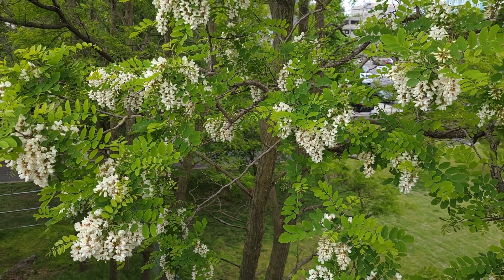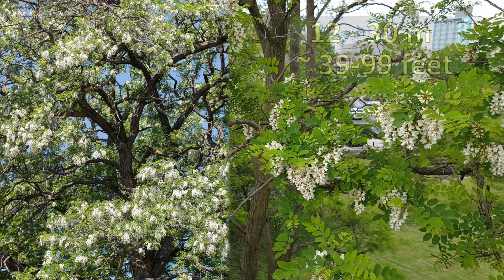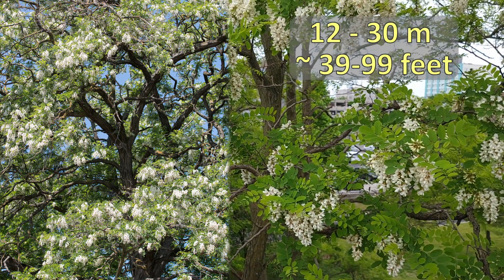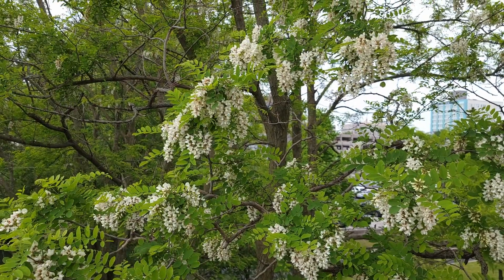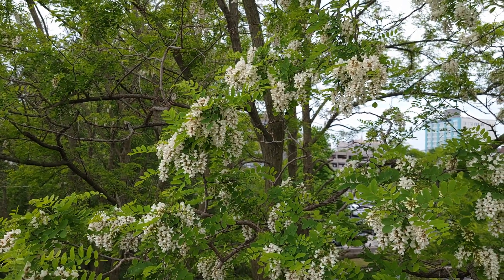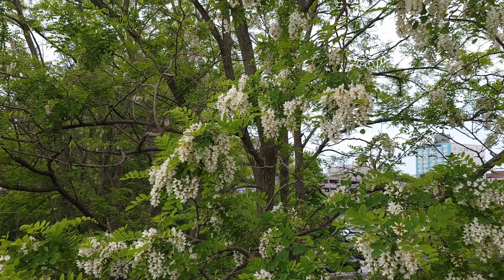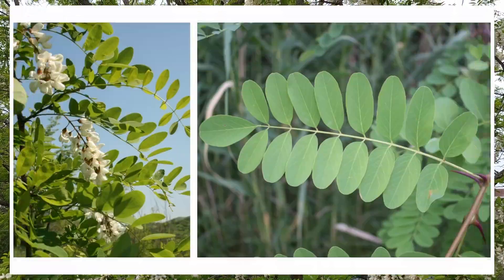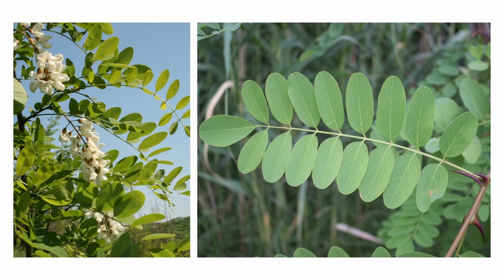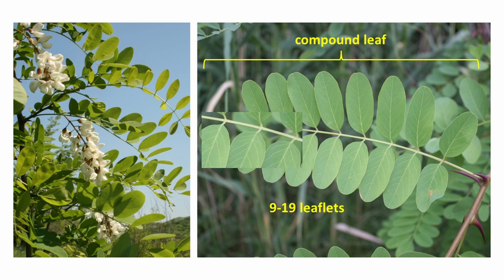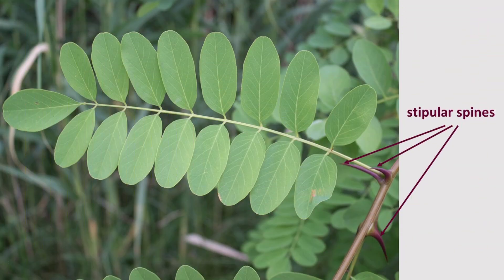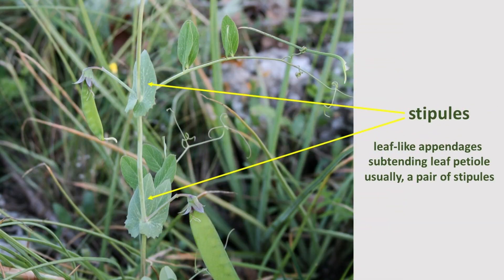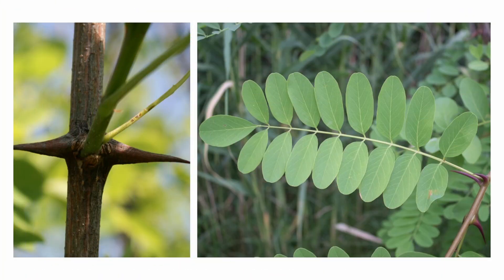A medium-sized deciduous tree, black locust reaches 12 to 30 meters tall. With a very straight trunk and slow-to-rot wood, it was a preferred tree for fence posts. It has alternate leaves, pinnately compound with 9 to 19 leaflets. Leaves are usually subtended by two stipular spines. Stipules are usually leaf-like appendages at the base of the petiole — in this case, they are transformed into stipular spines.